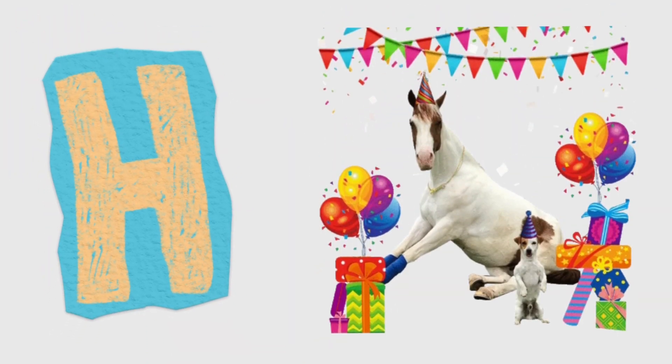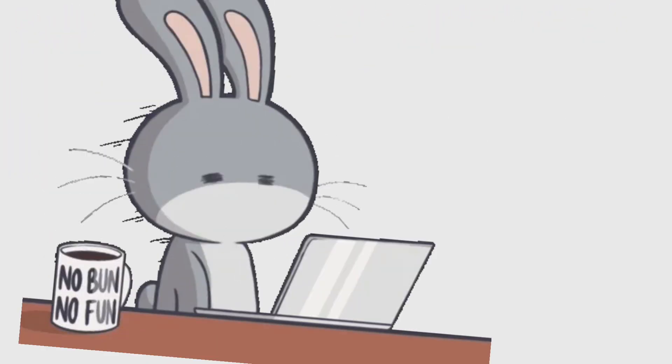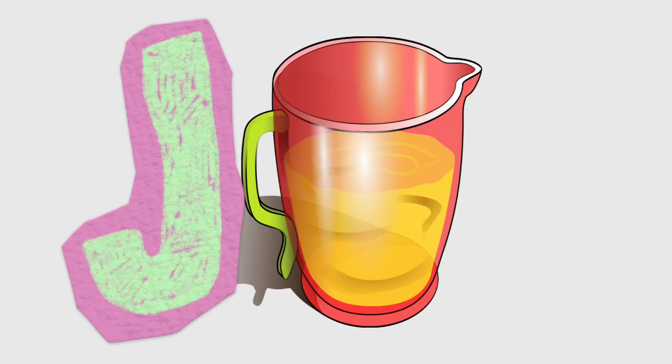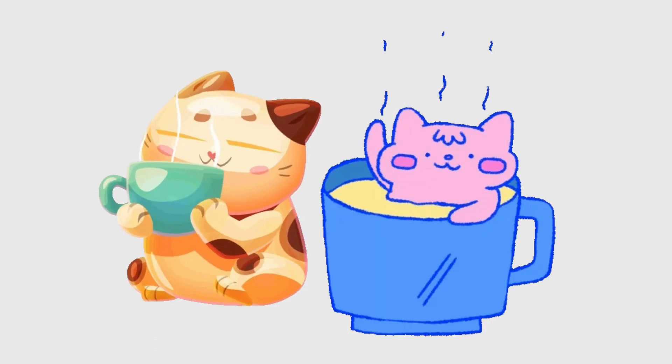H for Horse. I for Ice Cream. J for Jug. K for Kai.